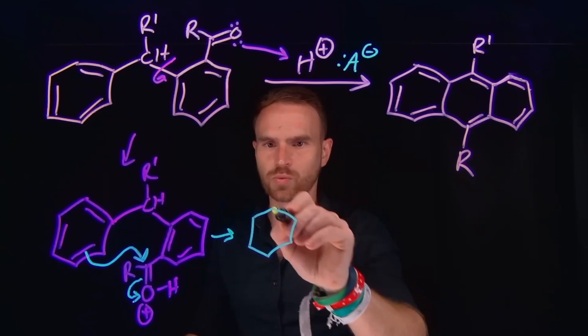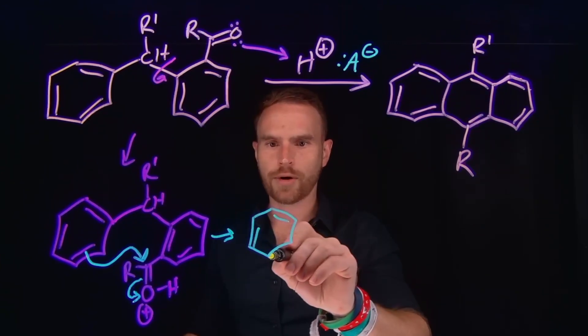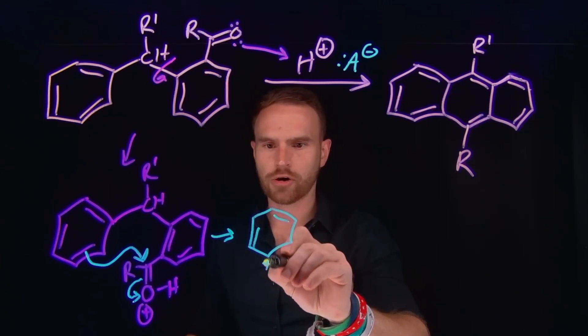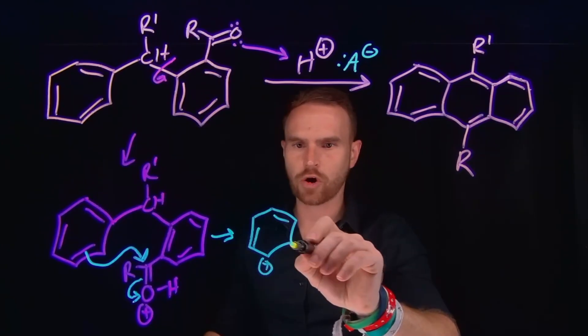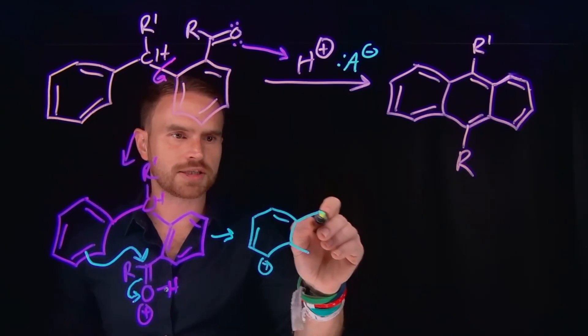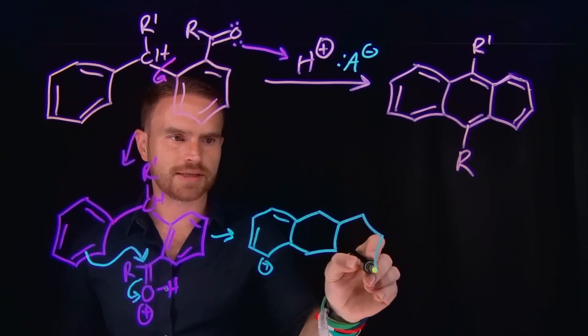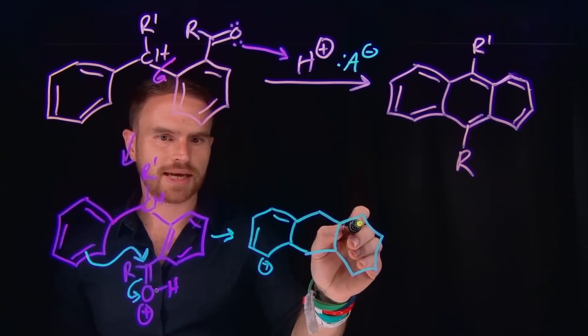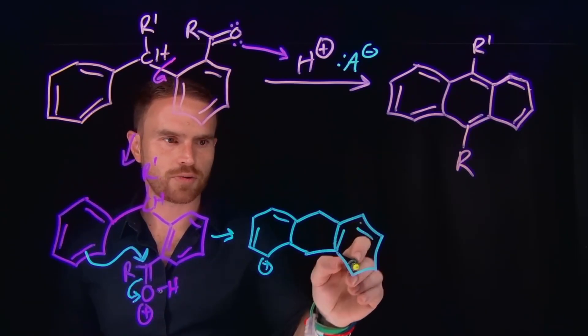So here we have disrupted the aromaticity, where now there should be a positive charge located at this carbon because our new carbon to carbon bond is here, which is how we generate this second six-member ring. And at this stage, everything else still remains the same. So I'll still place in all these other pi bonds.